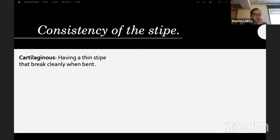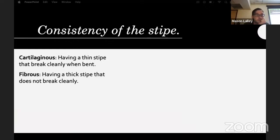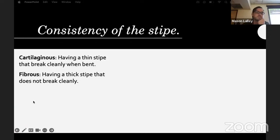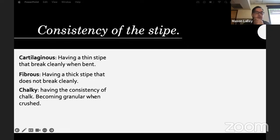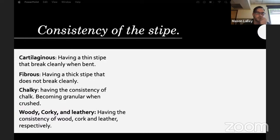The consistency of the stipe: cartilaginous means a thin stipe that breaks cleanly when bent — just the tiniest bit of give, kind of like a cooked chicken tendon. Fibrous means a thick stipe that does not break cleanly, like celery. Chalky has a consistency of chalk, becoming granular when crushed. Woody, corky, and leathery have the consistency of wood, cork, or leather — usually polypores range anywhere from cardboard to wood as far as how hard they are.